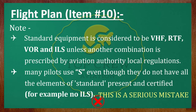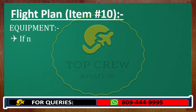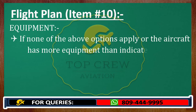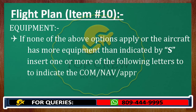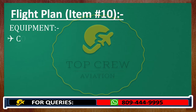If you are in such a situation, list all your equipment with the letters given. It is important in terms of flying, not just for exam purposes. If none of the above options apply, or the aircraft has more equipment than indicated by S, insert one or more of the following letters to indicate the communication, navigation, and approach aid equipment available and serviceable.